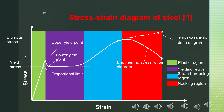From the beginning of the necking region onward, there is a clear difference between the true and engineering stress-strain diagrams. For nonlinear analysis in industry, we use the true stress-strain diagram, not the engineering stress-strain diagram. Up to the end of the strain hardening region, the two are approximately the same, so it doesn't matter much which one you follow — but in the necking region the difference becomes significant.